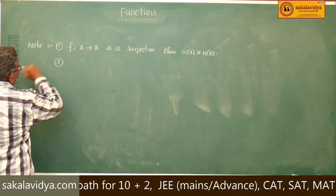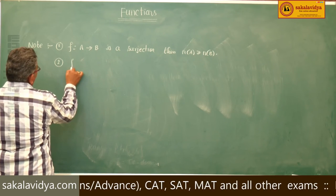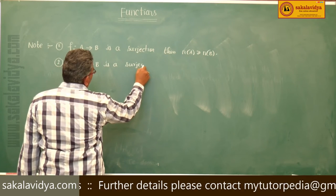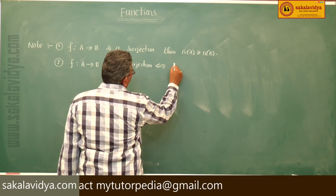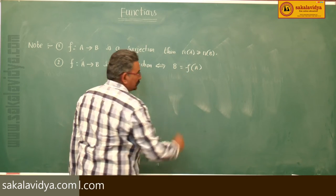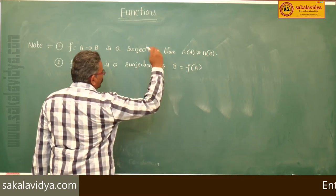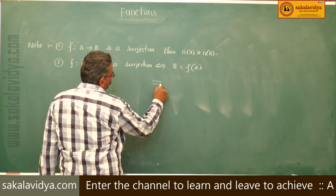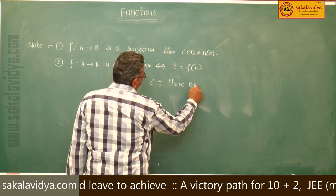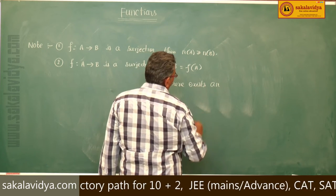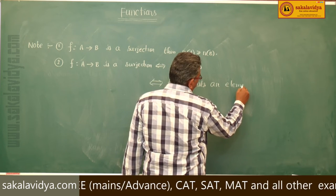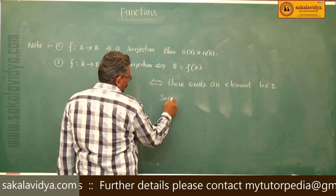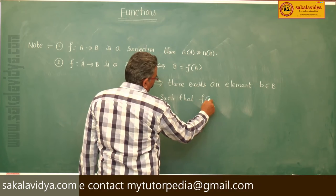Second point: mathematically, f maps A to B is a surjection if and only if B equals f(A), meaning the co-domain equals the set of images. Or we can write: there exists at least an element b belonging to B such that f(a) equals b.